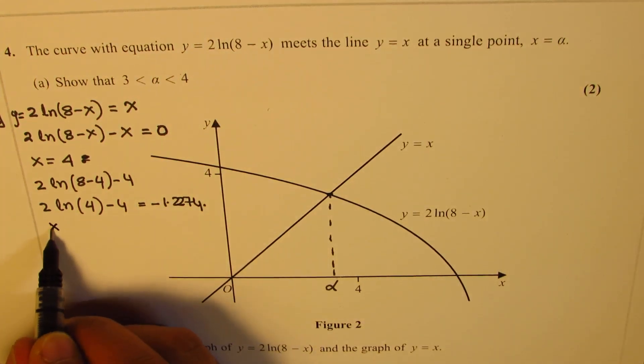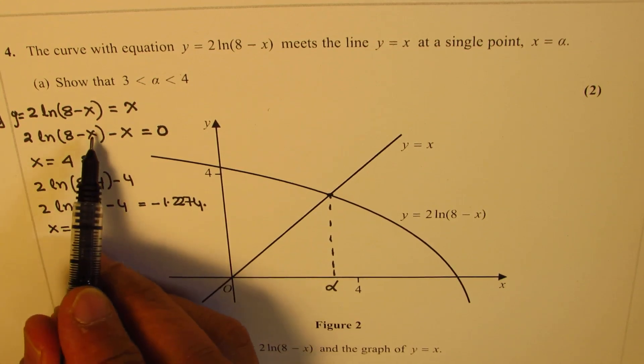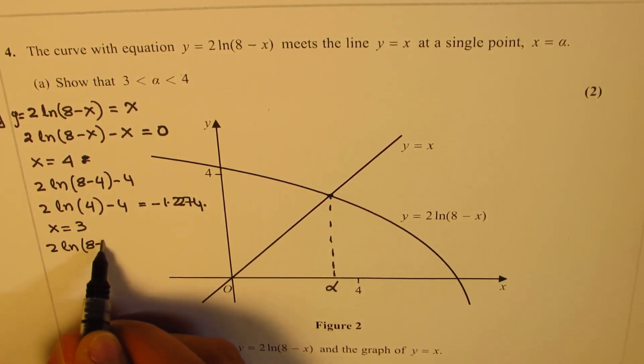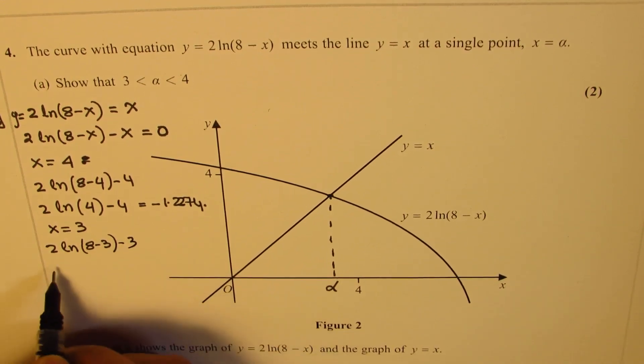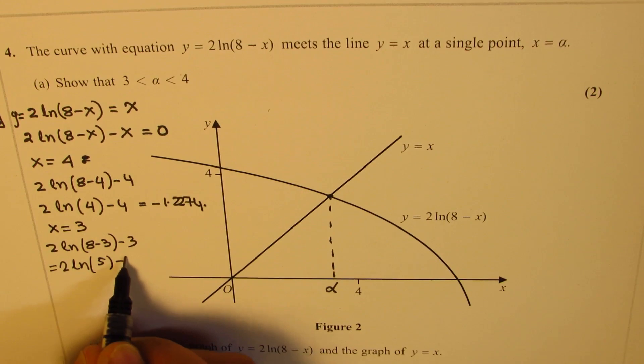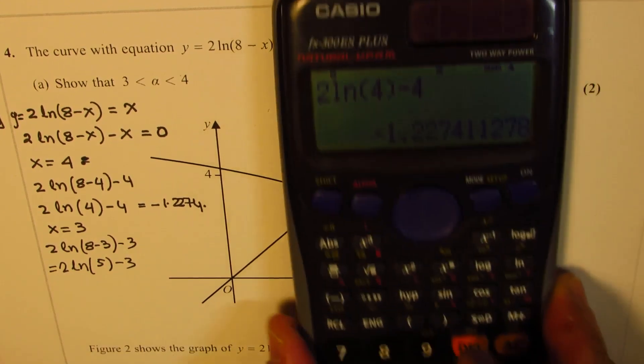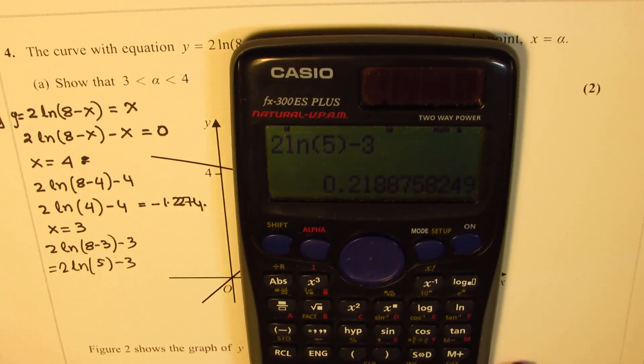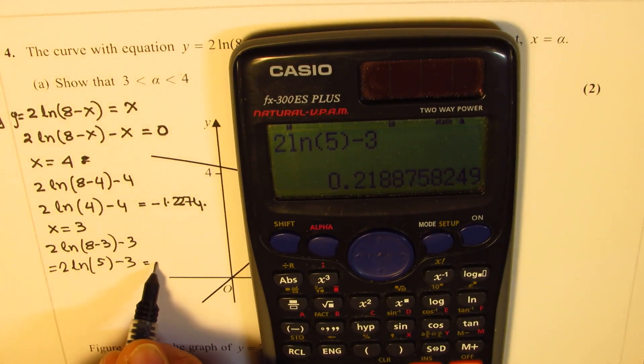Let us also find the value at x equals 3. When I substitute 3 here, I get 2 ln(8 - 3) - 3, and that is 2 ln(5) - 3. Let's calculate this value. So we have 2 ln(5) - 3, and that is equal to plus 0.2188.